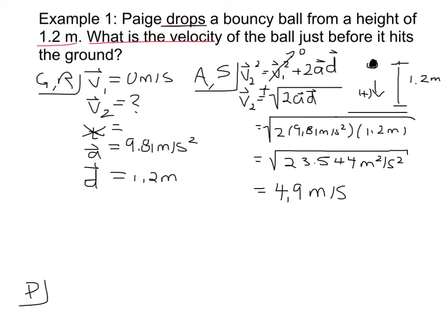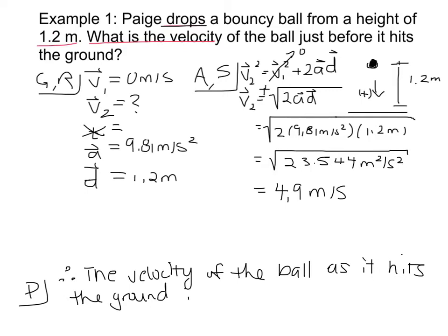So there's a good check there, and we got our positive answer. So therefore, the velocity of the ball as it hits, or just before it hits, because the ground obviously would stop it, but as the ball hits the ground is 4.9 meters per second.